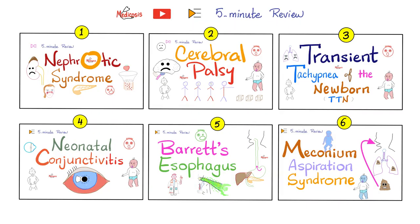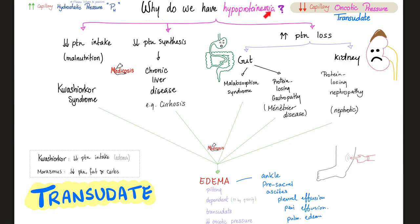This is my playlist. Please watch video number one before this video. As you know, there are a gazillion causes of hypoproteinemia — low protein in your blood. One of these causes includes a kidney problem. When the kidney is losing protein in the urine, we call this protein-losing nephropathy or nephrotic syndrome.